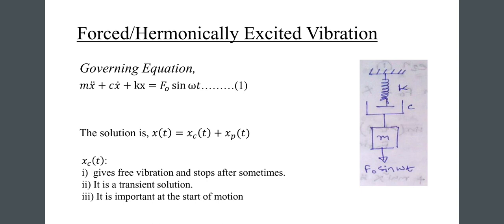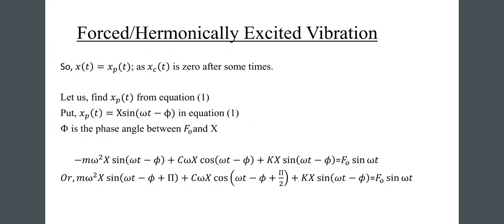Look at the governing equation: m·x-double-dot plus c·x-dot plus k·x equals f-naught·sine(omega·t) — call this equation 1. The solution is x(t) equals x_c(t) plus x_p(t). x_c(t) gives the free vibration response and stops after some time; it is a transient solution, important at the start of the motion.